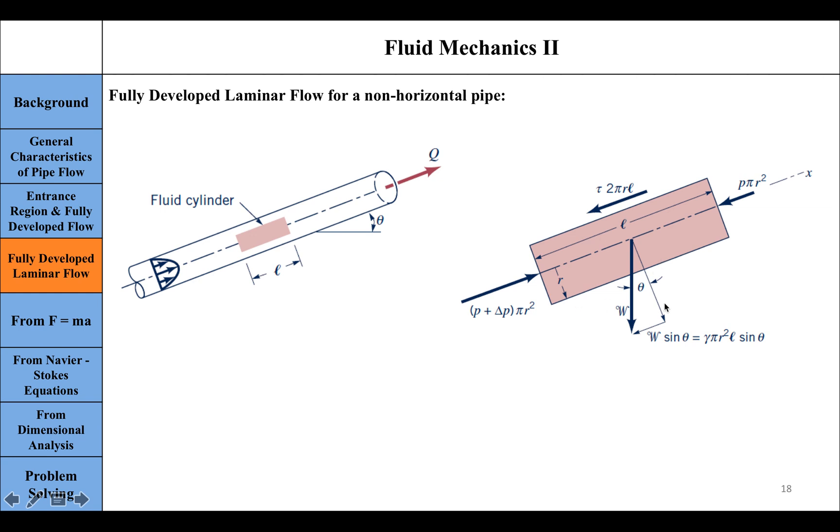We get the same equations as before, just with this additional term. A simple check: if you use these equations for a horizontal pipe, they're still valid. Just plug in θ = 0, and these terms become zero, leaving you with the same equations derived earlier.